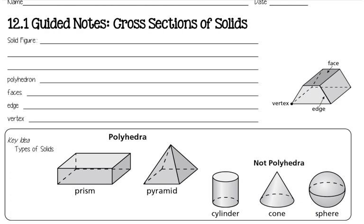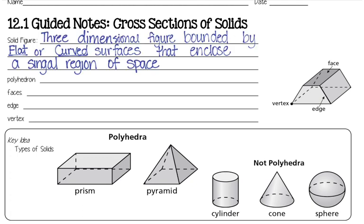First of all, before we can talk about what cross-sections of solids are, we actually have to have our lesson on solids themselves. So what do we mean by a solid figure? A solid figure is a three-dimensional figure bounded by either flat or curved surfaces, and they enclose a single region of space. When we say there's a single region of space, we're basically saying there's going to be some volume.